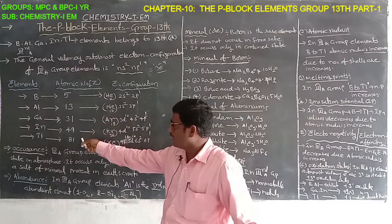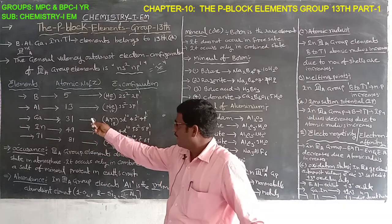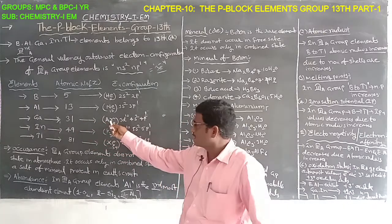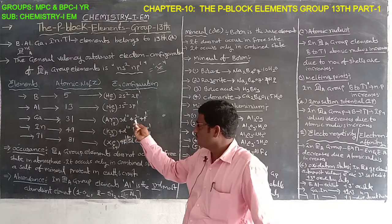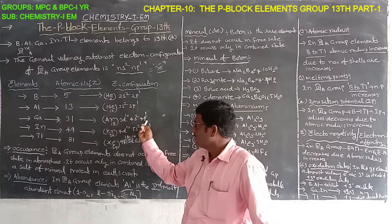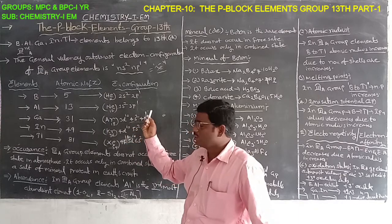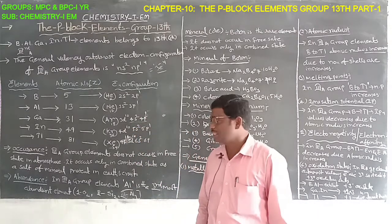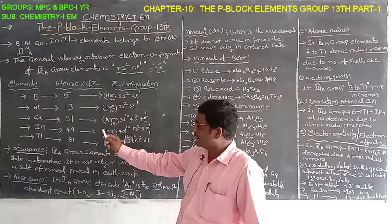Gallium has atomic number 31. Its electron configuration is [Ar] 3D¹⁰, 4S², 4P¹. The outermost valence electrons are 3, so it is also called a 3rd A group or 13th group element.